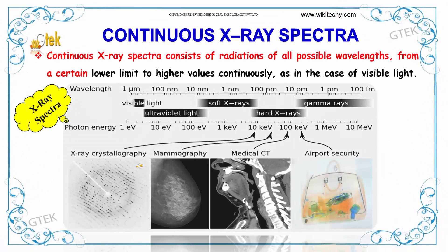Continuous X-ray spectra consists of radiation of all possible wavelengths, from a certain low limit to higher values continuously, as in the case of visible light.